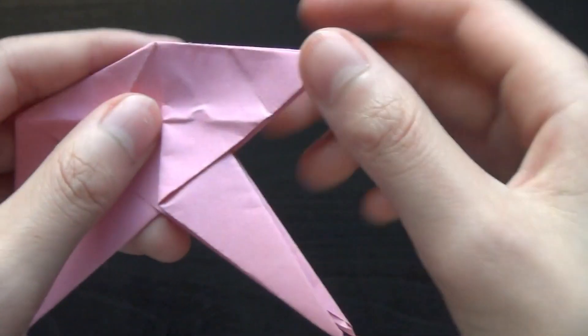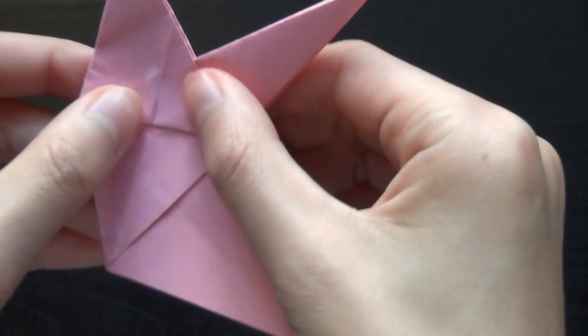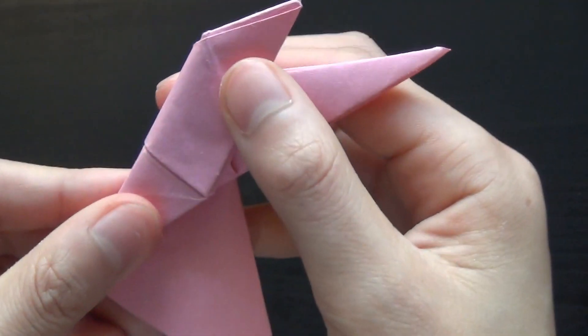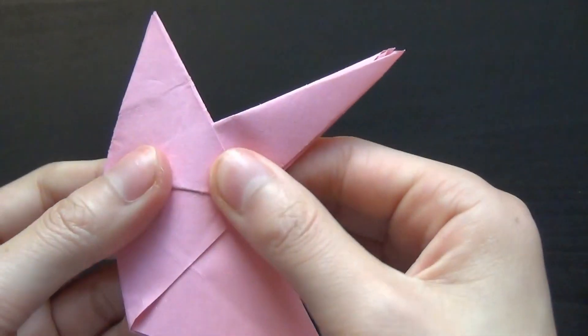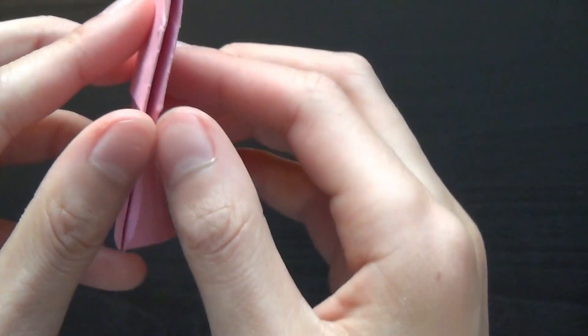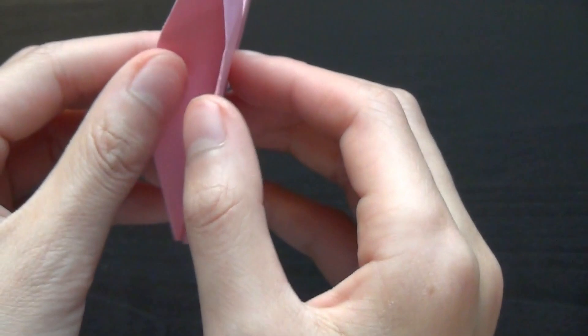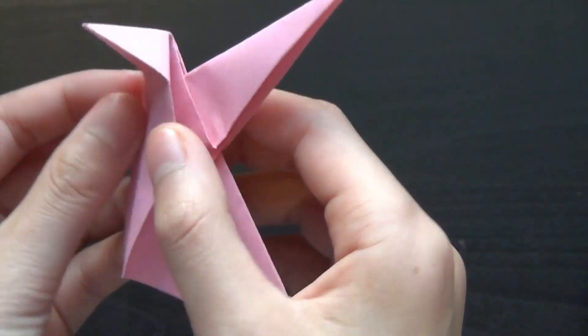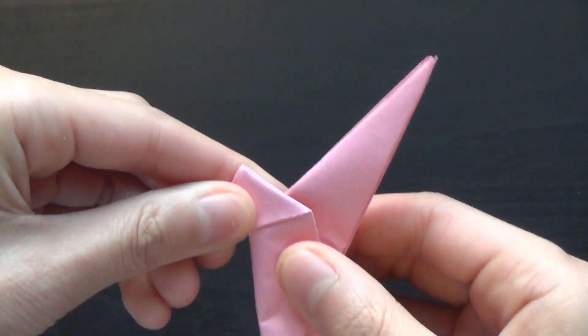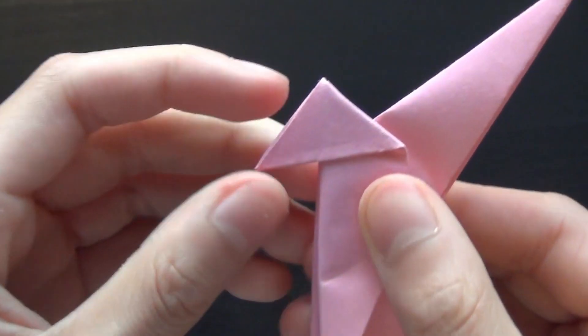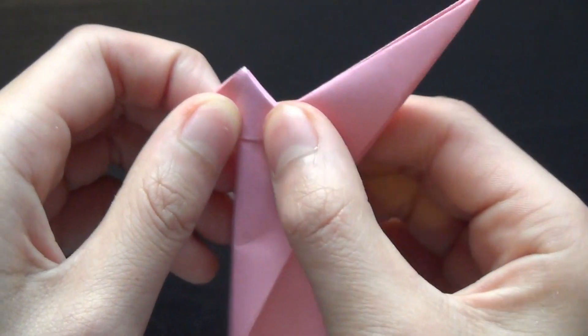Now open it and fold it on the other side. Now you want to take these two and pull them out, and push this one in. You can just pull this out a bit if you want.